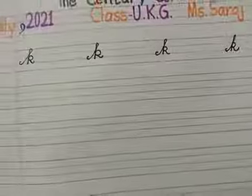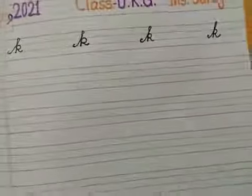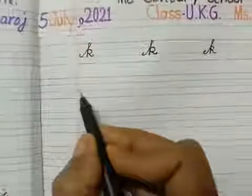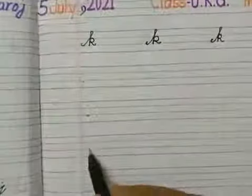Next, three lines. Next, we are writing here small letter L. Let's start.